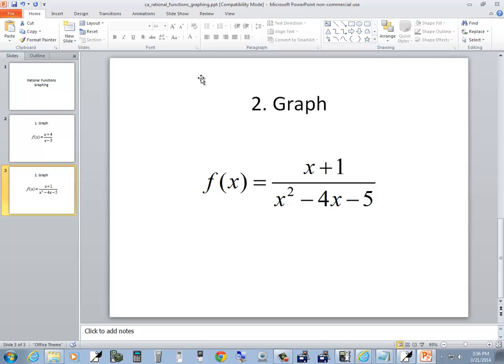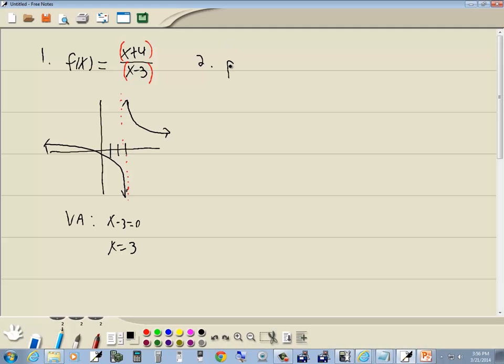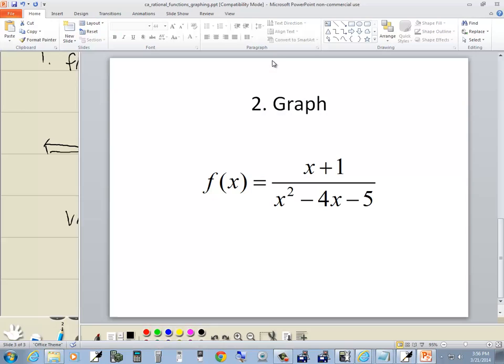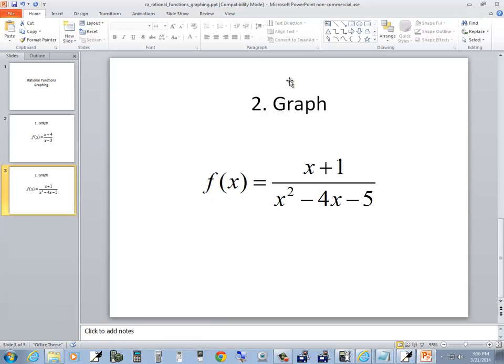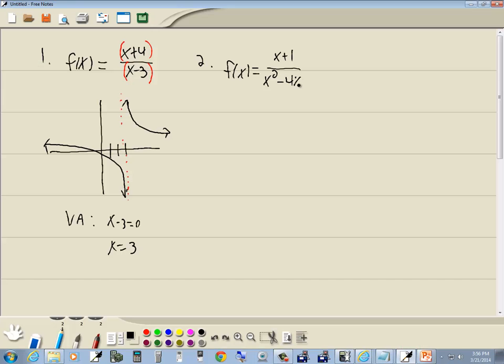Let's look at our next problem. We've got f(x) is equal to x plus 1 over x squared minus 4x minus 5.